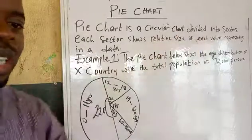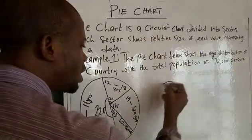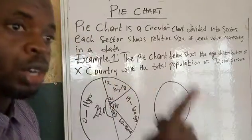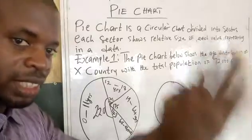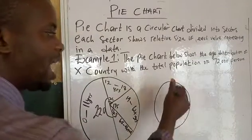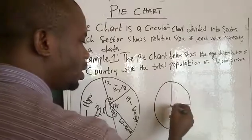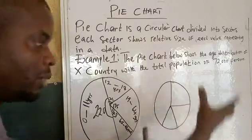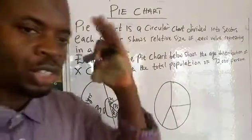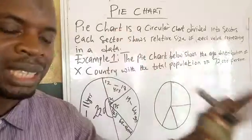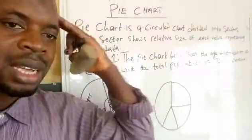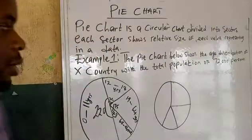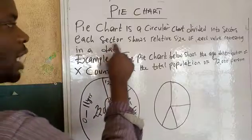By definition, a pie chart is a circular chart divided into sectors. You have a circle and you divide it into different sectors — different parts. When you just want to recollect what a pie chart is, just remember that using a circle to present data means pie chart.